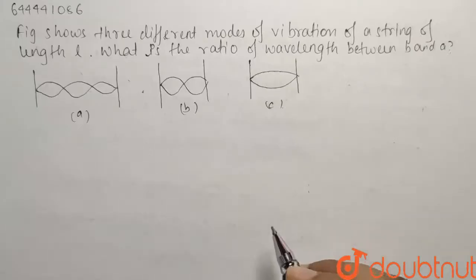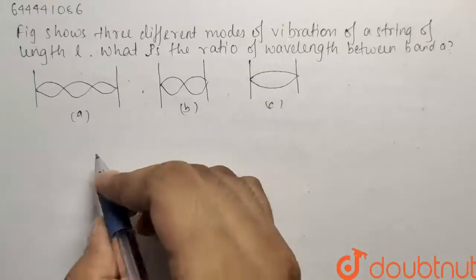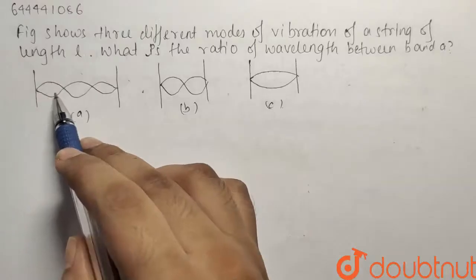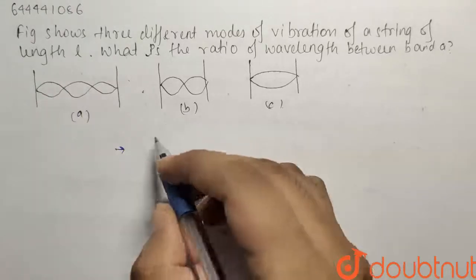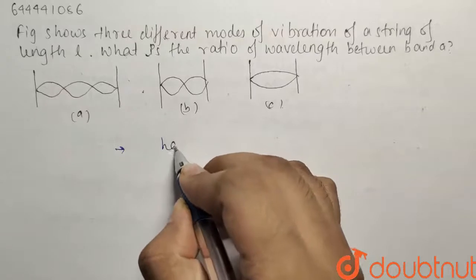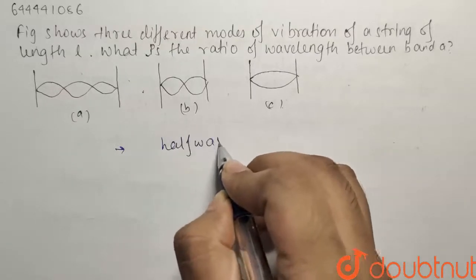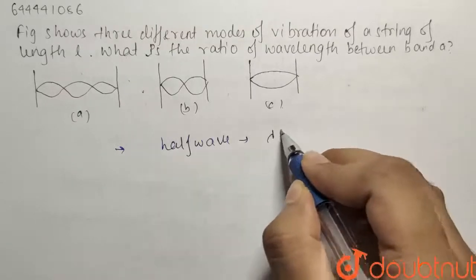So we have to have a look at the options B and A. So what I can see is that if I consider this to be a half wave, then we know that a half wave has length given by lambda by 2.